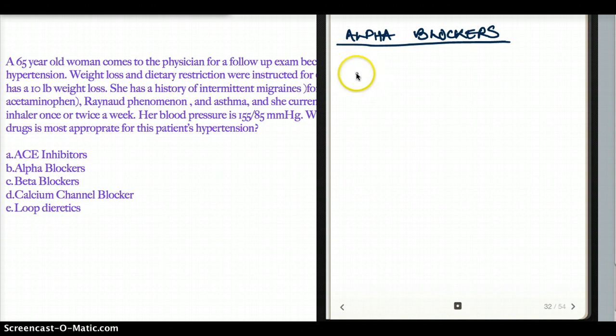What do we use alpha blockers for? We use it for BPH, benign prostatic hyperplasia. What do they do in BPH? They're going to decrease the sphincter contraction, and they're going to help with micturition and ameliorate the symptoms of urine retention. Again, alpha blockers is not my favorite choice. In fact, it's my least favorite choice. I would not use alpha blockers as an antihypertensive.